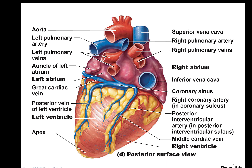One of the coronary veins we talked about is the coronary sinus, which you can see right here. The coronary sinus is on the back of the heart. This is a posterior view, so we are looking at the back of the heart. You can see the apex here, and the coronary sinus right here. All of the other coronary veins of the heart flow into the coronary sinus, a large flat vein on the back of the heart.